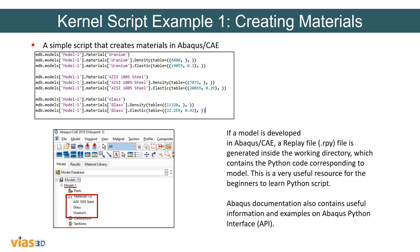A very good way to learn Python script, besides reading Abacus documentation, is to use replay files in Abacus. Every time you do anything in Abacus CAE, a replay file is created automatically — it's called the .rpy file. Whatever actions you take in Abacus CAE, they are saved in the form of Python commands in that .rpy file. So to start learning Python coding in Abacus, you can back-trace what you did, see what commands you used, and then see what code was generated. That's how I started learning Python in Abacus CAE.